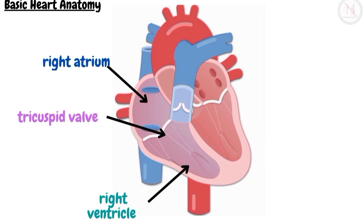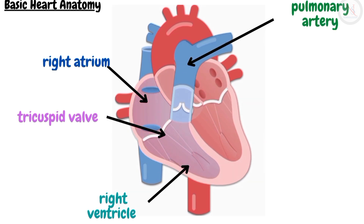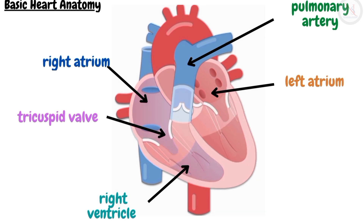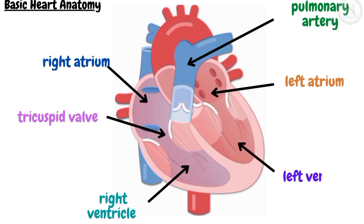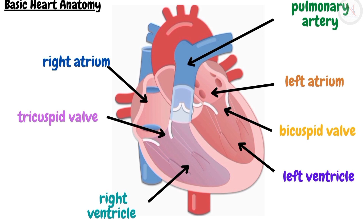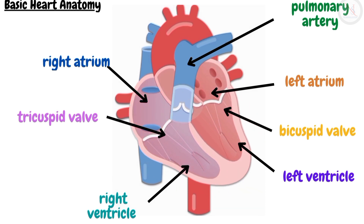The blood from the right ventricle flows through the pulmonary artery and gets oxygenated in the lungs. From the lungs, the oxygenated blood returns back to the left atrium through the pulmonary veins, passes down into the left ventricle through the bicuspid or mitral valve, and then the oxygenated blood from the left ventricle passes through the aorta, which helps blood circulate to the entire body.